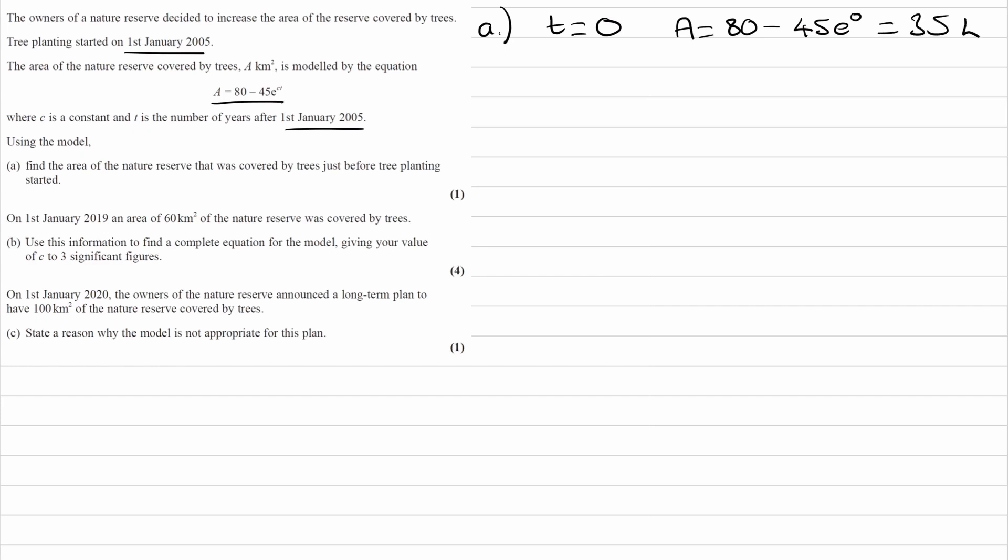This then becomes 35, and that's the answer to part A - 35 kilometers squared. That's pretty straightforward. Part B, we're given a date and told an area of the nature reserve is covered by trees. We want to use that information to find a complete equation for the model, giving our value of C to 3 significant figures.